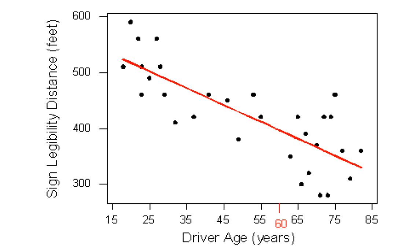If we had such a line, we would simply use it to find the distance that corresponds to an age of 60, like this, and predict that 60-year-old drivers could see the sign from just under 400 feet.